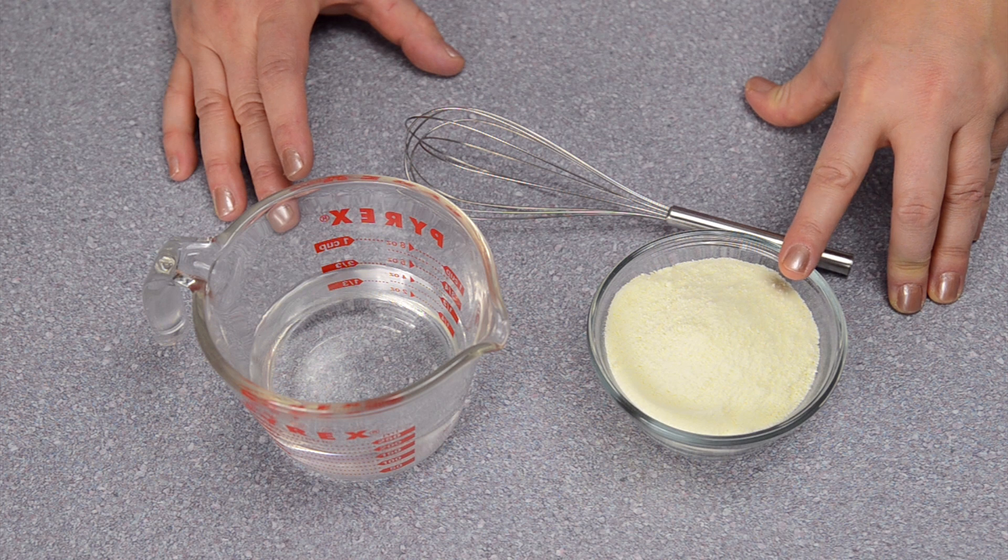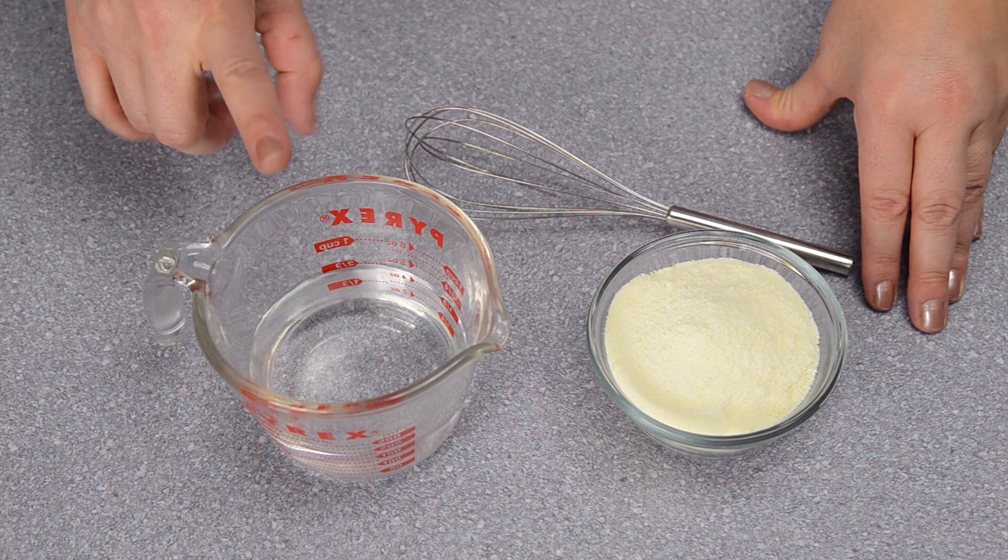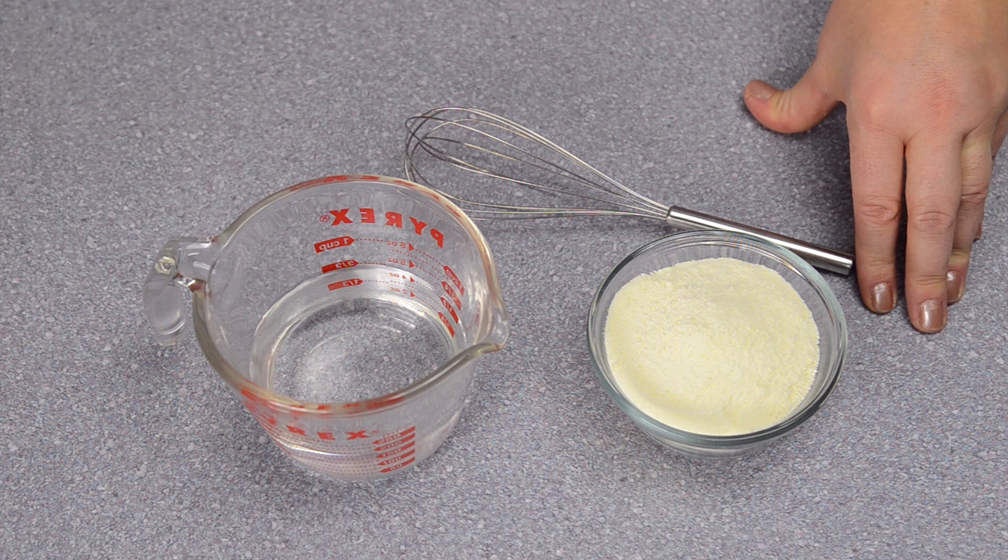So in this container here is two-thirds of a cup of powdered skim milk, and here is three-quarters of a cup of water.